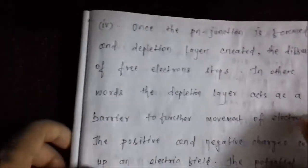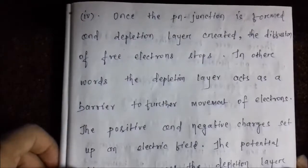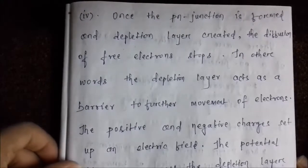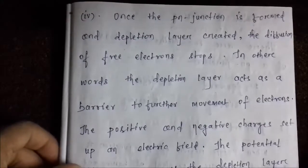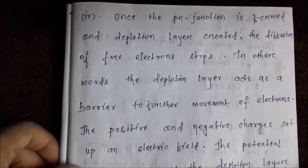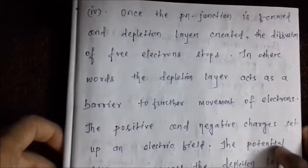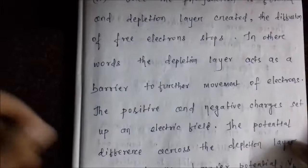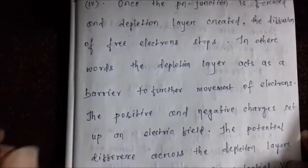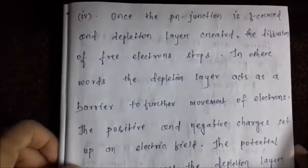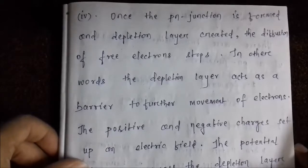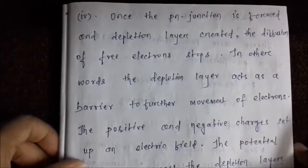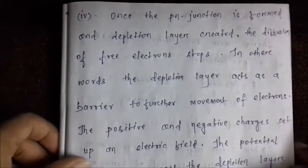Once that barrier potential is formed, which is called VB, that barrier potential stops further diffusion of electrons from the N type material to the P type material.